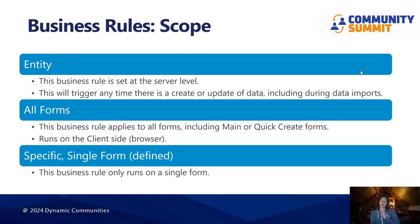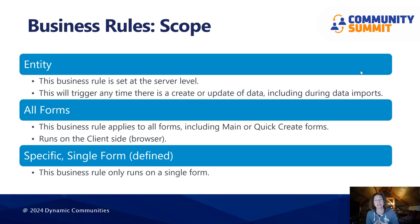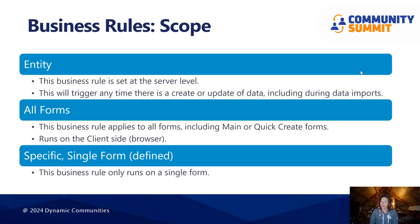Number one is your scope. It's really important to understand the scope in which your business rule is set — it's in the top right-hand corner when you're creating your business rule. The first option is entity. That means this business rule is being triggered at the server level, so it's going to fire any time there is a create or an update of data on that table. This includes data imports, which can be really helpful if you want this business rule to run when you're uploading new leads, for example.